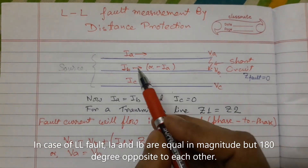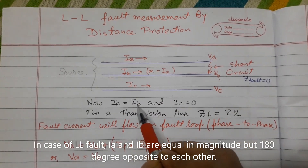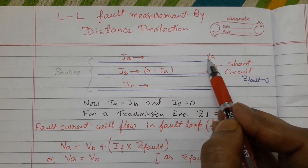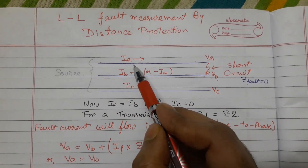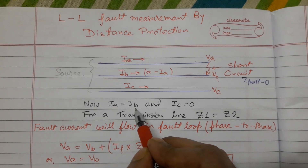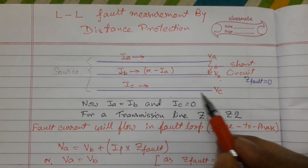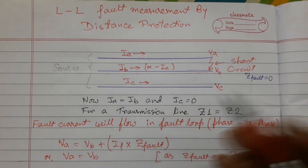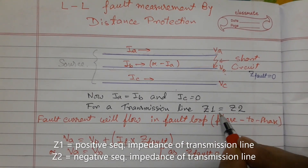From this diagram we can conclude that Ia equals Ib, because this Ia current is going to the fault and the same current returns to the source. So Ia equals Ib. We also assume that load current was zero before the fault, so Ic equals zero. In any transmission line, Z1 equals Z2, where Z1 means positive sequence impedance and Z2 means negative sequence impedance.